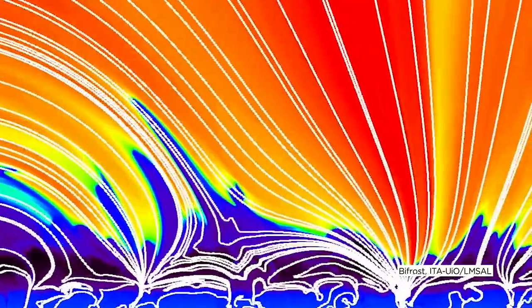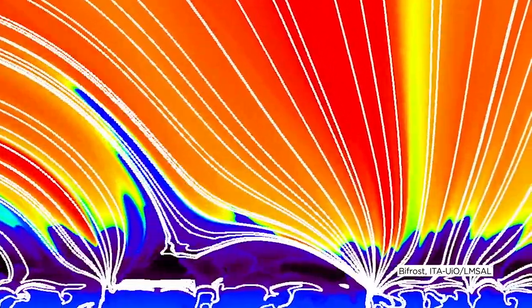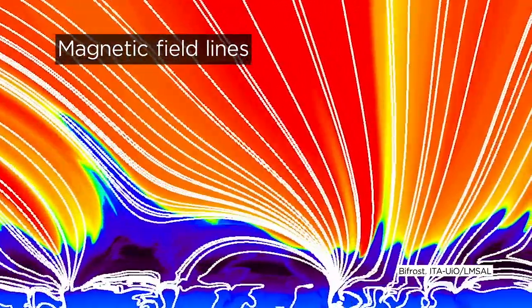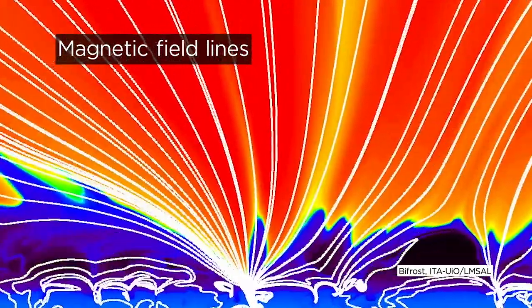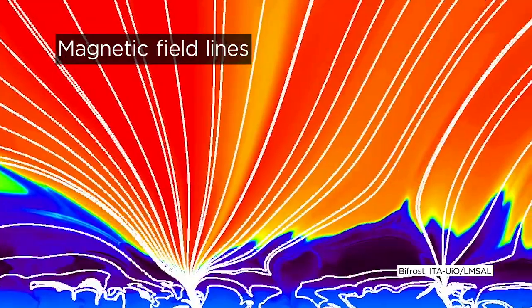Scientists believe that this interaction drags tangled magnetic field lines up above the sun's surface, allowing them to straighten and expel solar material at high speeds, similar to a whiplash.